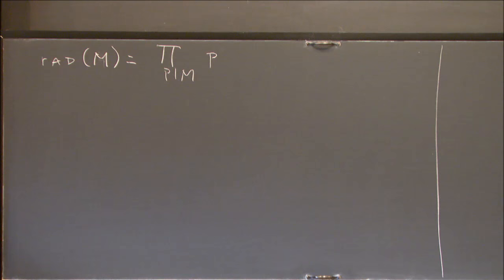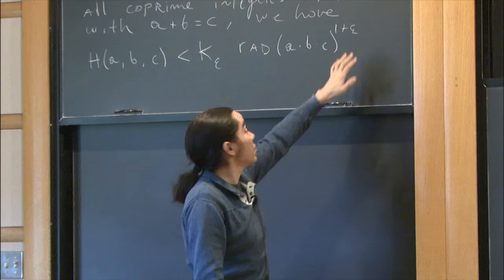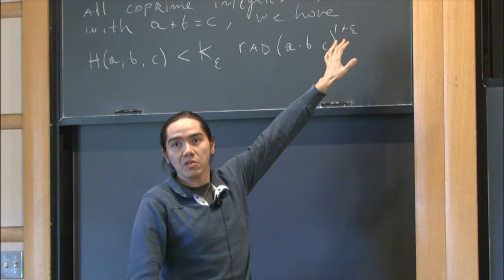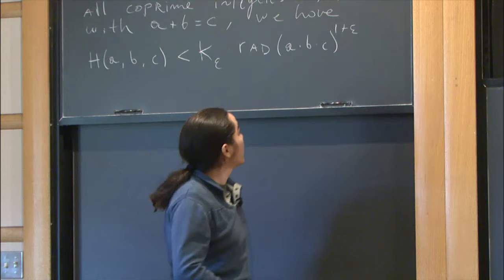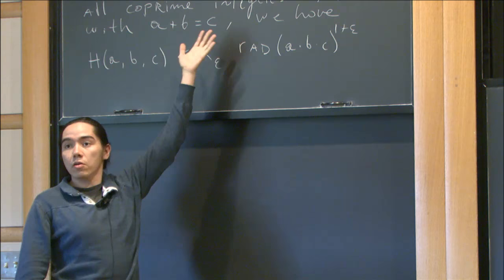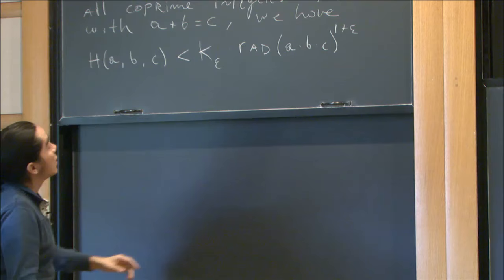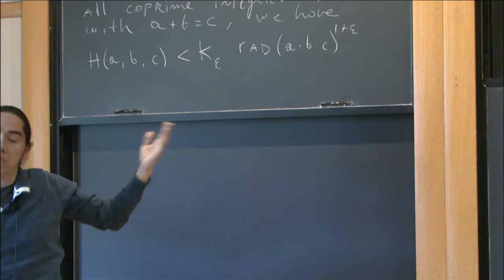Some remarks: the reason there is an epsilon here is that you would like the lowest exponent in the bound. However, if you don't put the epsilon, it doesn't matter how large the constant is — this is going to be false. There are going to be infinitely many counterexamples. So you definitely need an epsilon there. One way to think about this conjecture is that whenever you have an additive condition on the integers, it tells you something about the multiplicative structure: a, b, and c cannot have too many repetitions in the prime factorization.